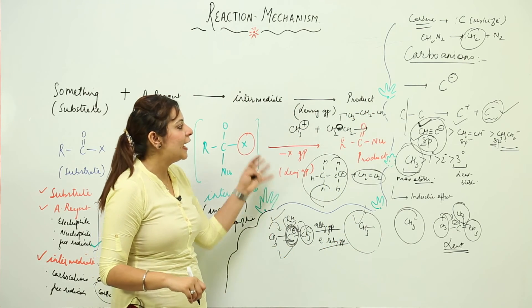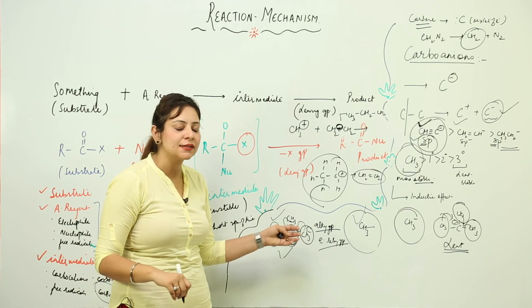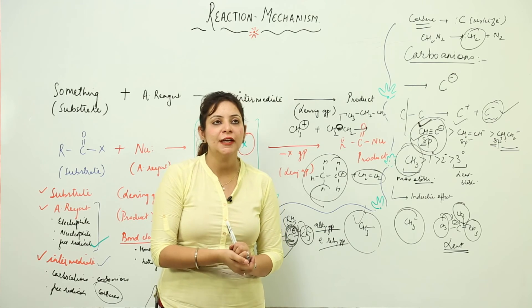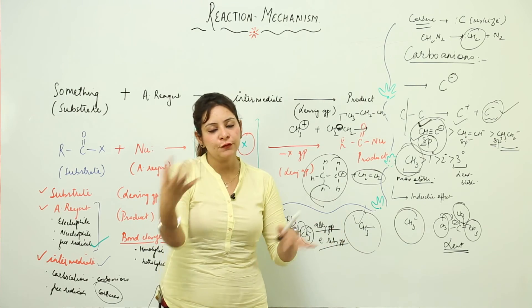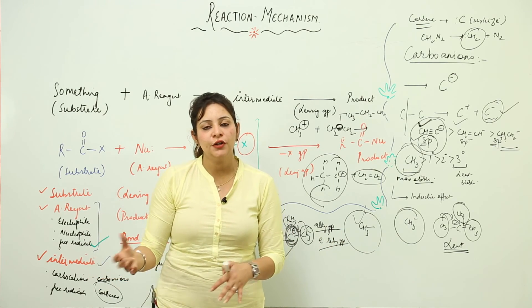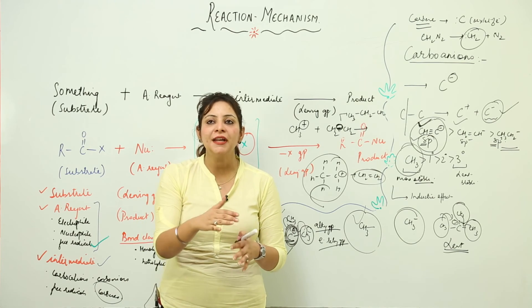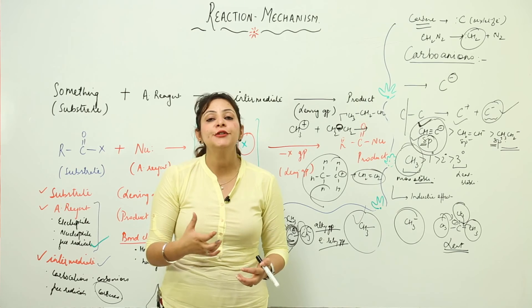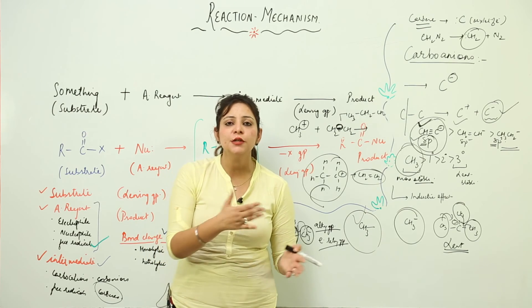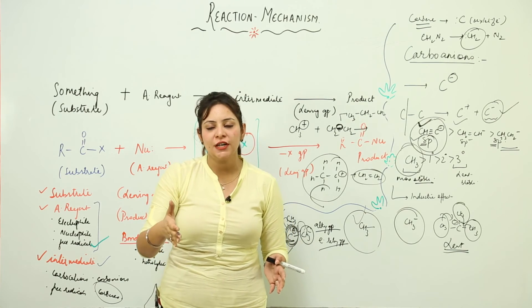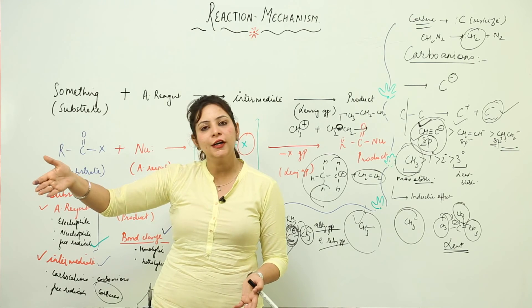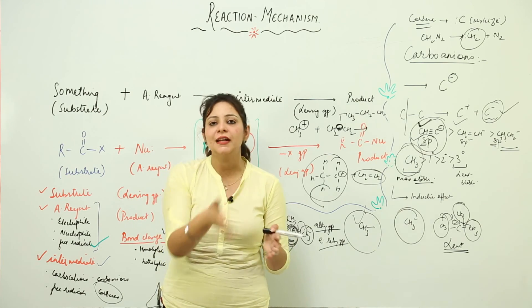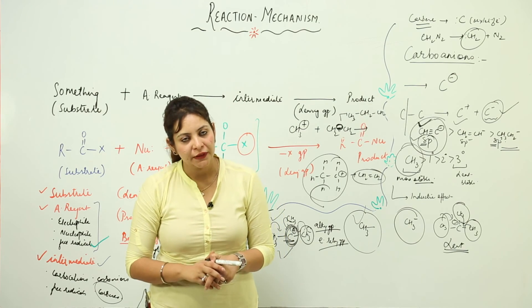So carbocations can add up into an alkene, giving rise to a larger alkane or alkyl carbocation. Moreover, we can observe rearrangement occurring in carbocations — a tertiary carbocation can transform into a secondary or a primary one. Sometimes an alkyl group migrates, sometimes a hydrogen migrates — these are called alkyl shifts or hydride shifts — just the movement of the positive charge along the chain. That is something called rearrangement.